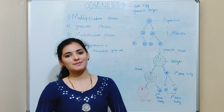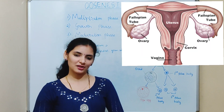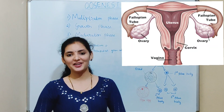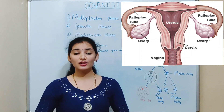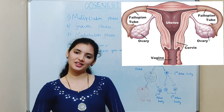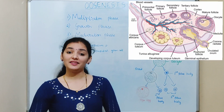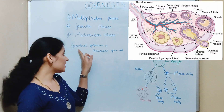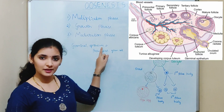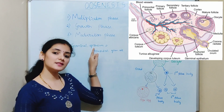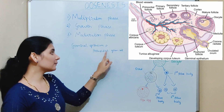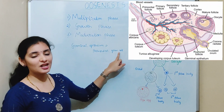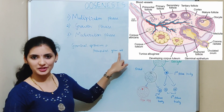The process of oogenesis takes place in the female reproductive organ known as ovaries. Ovaries are the oval-shaped paired organs present in the lower abdominal cavity near the pelvis region. These ovaries are covered by an outermost layer known as germinal epithelium, which consists of cells known as primordial germ cells. It is these primordial germ cells which undergo the process of oogenesis.